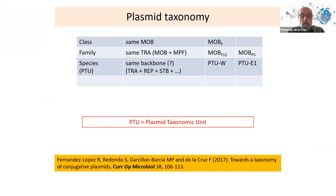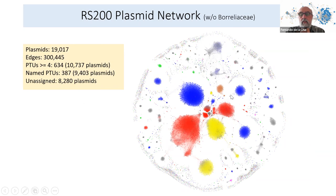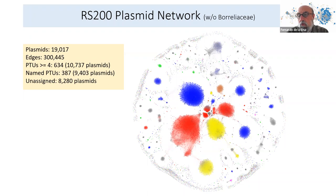We have now updated our database to RefSeq 200, meaning we have analyzed over 19,000 plasmids — more than double what we used before. This is the overall picture of the network, and in this network we now have 634 PTUs containing four or more members, which is about 60% of all plasmids.